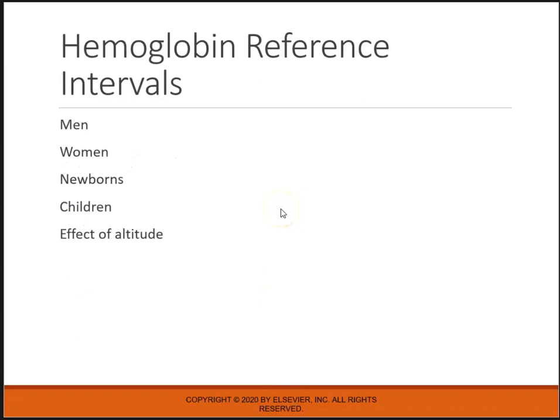What are the hemoglobin reference intervals? There is a difference between men and women, newborns, and children. Men have more muscle mass, so they usually have more hemoglobin. Women have monthly menstruation, so their hemoglobin will be lower than men. Newborns usually have a lot of hemoglobin and it drops off to about age two, then slowly starts coming back up. Children at age two will be like 10 to 11 and slowly come back up.